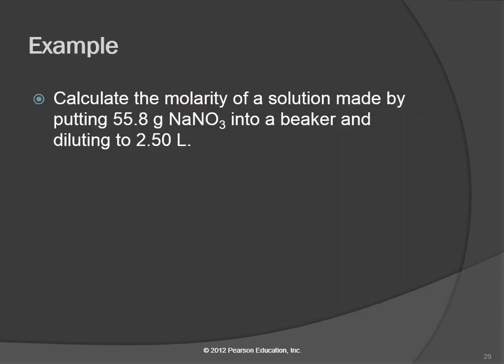Let's calculate the molarity of a solution made by putting 55.8 grams of sodium nitrate into a beaker and diluting to 2.50 liters. So the volume of the solution is the 2.50 liters. It's asking for molarity. So molarity is moles of solute per liter of solution. We're given liters of solution, but they didn't give us moles of solute. So we have to figure that out. Can we figure that out from the mass and the chemical formula? Yes, we can.